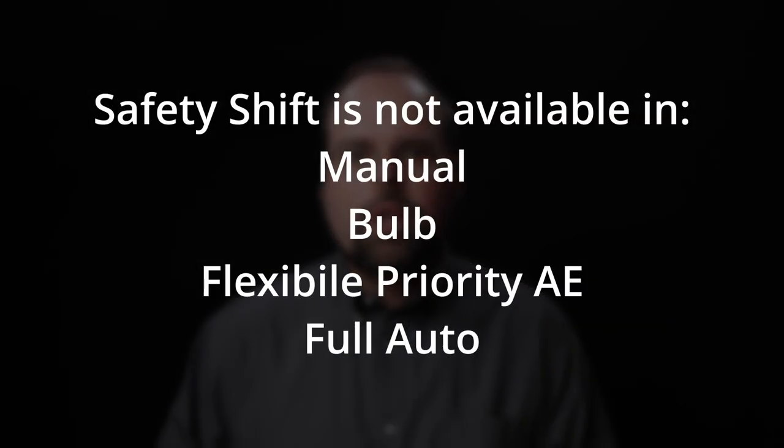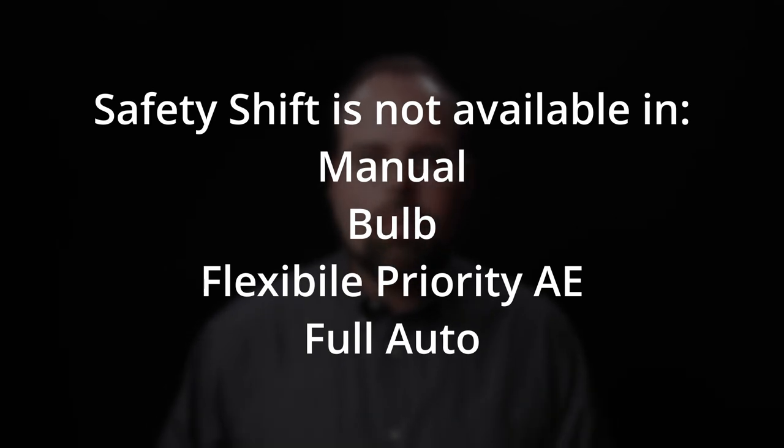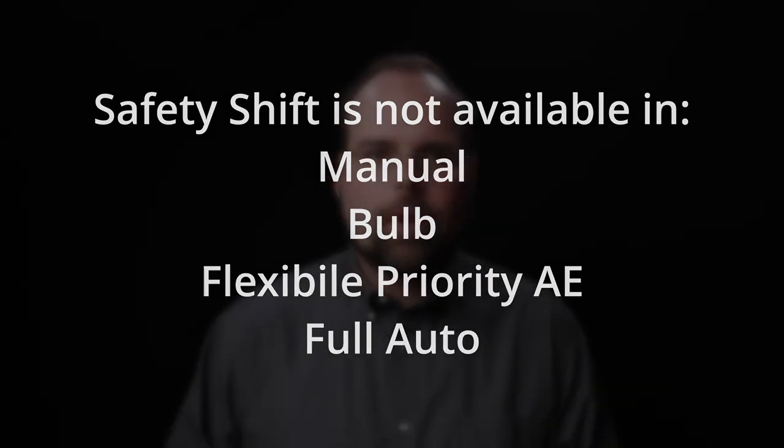Safety shift is not available in manual, bulb, flexible priority, or the full auto/auto plus exposure modes. Now some of you might be thinking, that ISO option looks a lot like auto ISO — why not just use auto ISO instead? And you'd be right that safety shift's ISO mode does look a lot like auto ISO, but it comes from a different intent, a different background, and has different limitations.